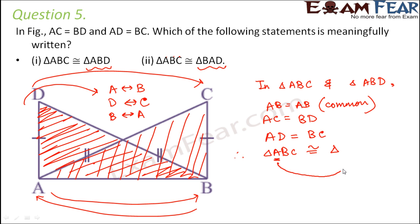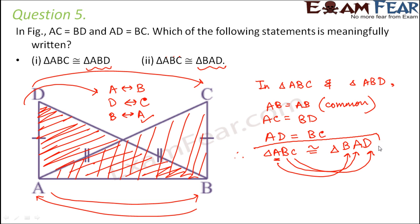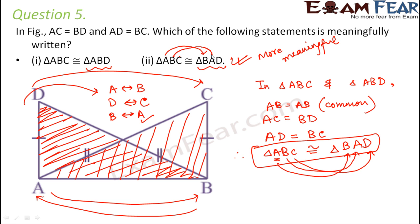So when we write triangle ABC, the corresponding vertex for A is B, the corresponding vertex for B is A, and the corresponding vertex for C is D. So we write triangle BAD. This is more meaningful. Even if we write triangle ABC is congruent to triangle ABD it is not incorrect, but triangle BAD is more meaningful because by looking at it you can say point A corresponds to B, B to A, and C to D.